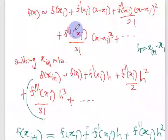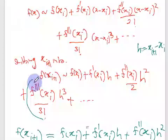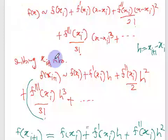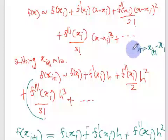Let's consider the Taylor expansion of f around xi. To get the Taylor expansion of f evaluated at xi plus 1, you substitute into the infinite series. Here, h is defined as the distance between xi plus 1 and xi, which is a positive value.